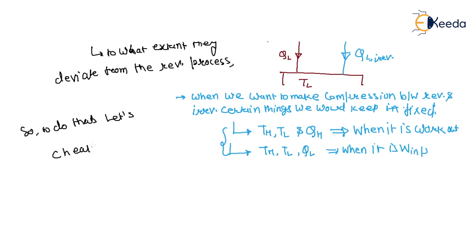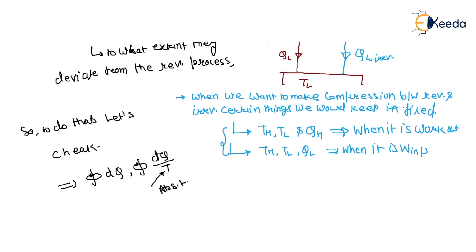Let's check what is the cyclic integral of dQ and the cyclic integral of dQ/T. We will check these two parameters for a quantitative analysis of the extent of irreversibility as compared to the reversible process. Note that this temperature is in absolute temperature. In the next video we will check which parameter is a good representation of the quantitative analysis for the extent of irreversibility as compared to reversibility.